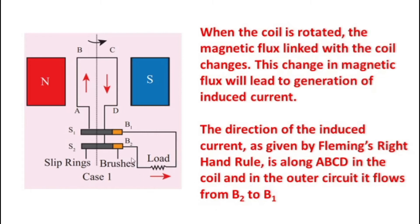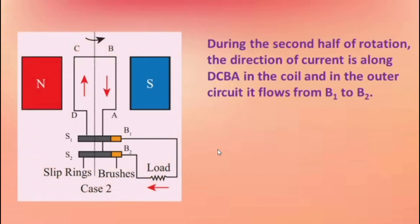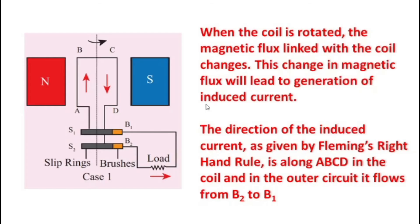In the coil, the current flows along ABCD, and in the outer circuit it flows from B2 to B1 — from brush B2 to brush B1. During the second half rotation, the armature finishes the first half, and as it moves to the second half rotation, the direction of current changes to along DCBA.